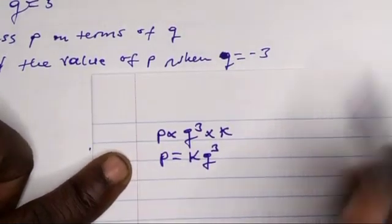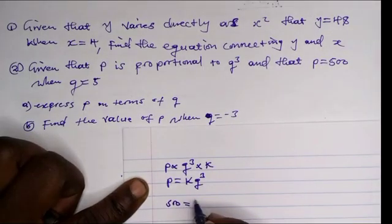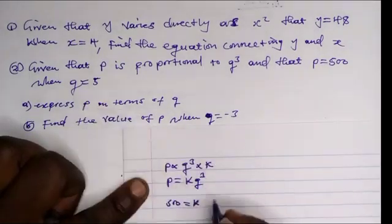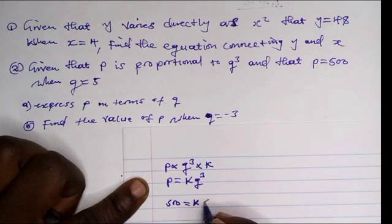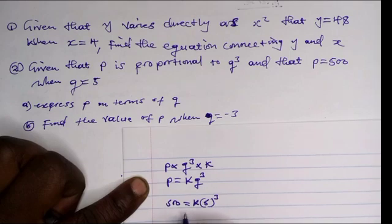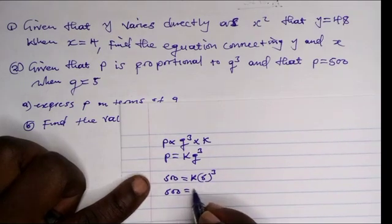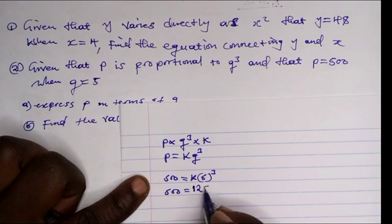We are told that p is 500. For k, we substitute q equals 5, so 5 cubed. We have 500 equals k times 125.